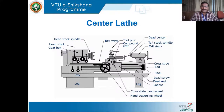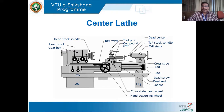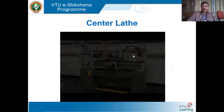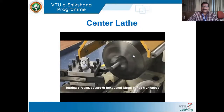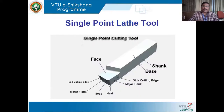Hello everyone, this is Dr. Khaled Imran. This is your second lecture on Module 5, Part 1: Machine Tools. In the previous class we discussed what exactly is a machine tool, different types of machine tools, what is a center lathe, its different parts like headstock, tailstock, the carriage assembly, and the lead screw. You had also seen a video on the working of the center lathe.